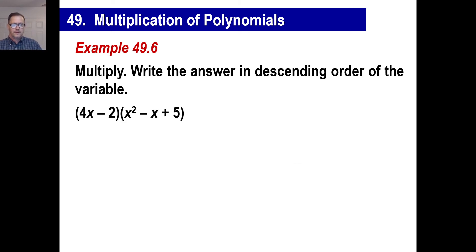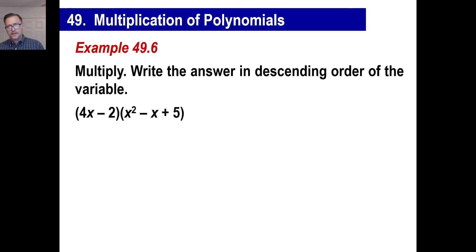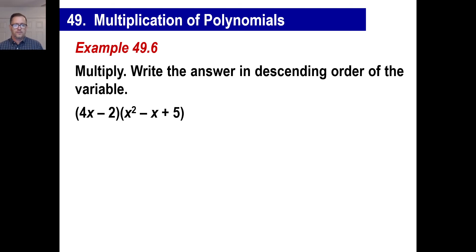One more. This one looks a little different. There are two terms in the first parentheses and three terms in the second parentheses. We don't care — the method is you just take the 4x and go across, then take the negative 2 and go across. It doesn't matter how many terms there are — you could have 20 of them and it would still work.